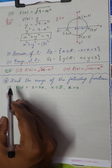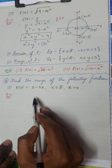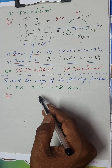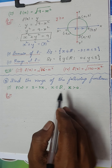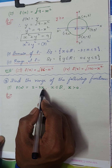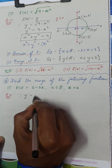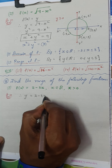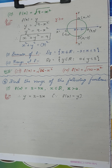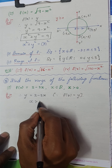Here comes question number 5: find the range of the following functions. There are three sub-questions. In almost all the given functions, the domain is the real numbers. For the first sub-question, f(x) = 2 - 3x, with x strictly greater than 0. We know f(x) = y, so y = 2 - 3x. Starting with the condition x > 0.